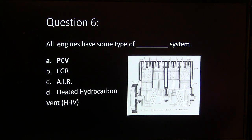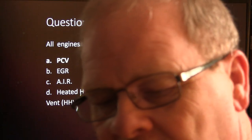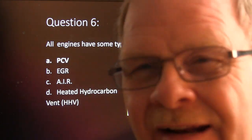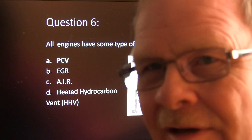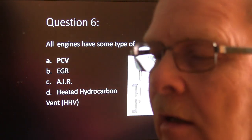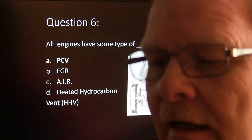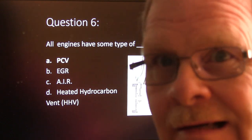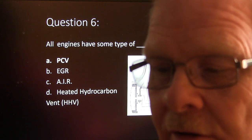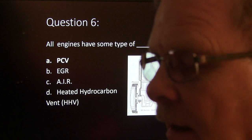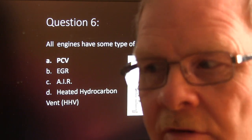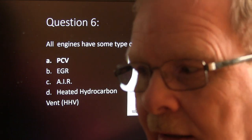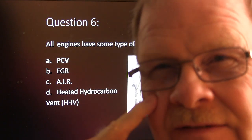All engines have some type of PCV system. They have to have crankcase ventilation because some of that blow-by gas is going to go by those rings and needs to be dealt with. If you had the crankcase sealed up with no positive crankcase ventilation of any kind, it would blow all the gaskets because the pressure would become excessive. If the PCV system is clogged up on both sides, it will blow gaskets anyway, so make sure you have an operational PCV system.